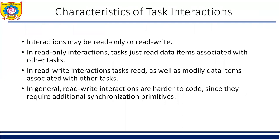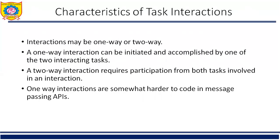Interaction may be read-only or read-write. In read-only interaction, a task just reads the data associated with other tasks. In read-write interaction, tasks are generally harder to code since they require additional synchronization primitives. Interaction may also be one-way or two-way. One-way interaction can be initiated and accomplished by one of the two interacting tasks, while two-way interaction requires participation from both tasks. One-way interactions are somewhat harder to code in message passing APIs.